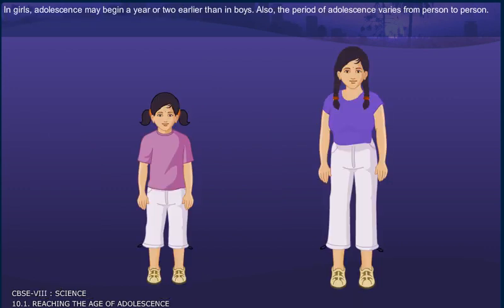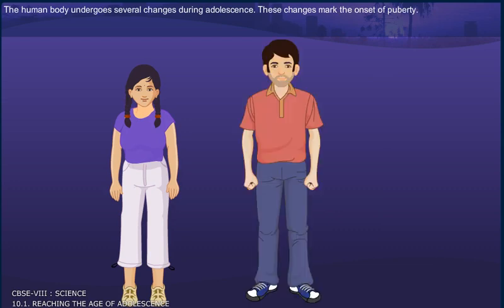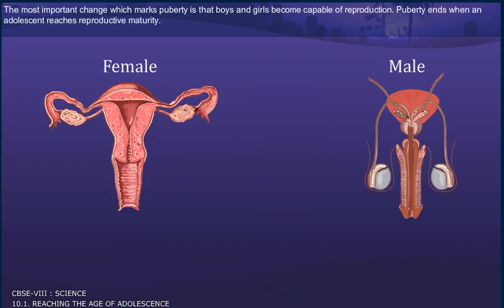In girls, adolescence may begin a year or two earlier than in boys. Also, the period of adolescence varies from person to person. The human body undergoes several changes during adolescence. These changes mark the onset of puberty. The most important change which marks puberty is that boys and girls become capable of reproduction. Puberty ends when an adolescent reaches reproductive maturity.